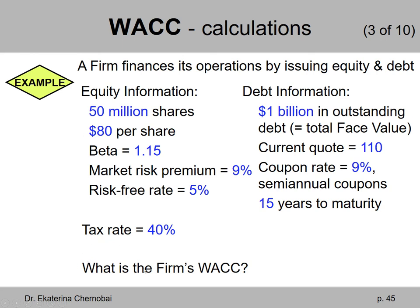The question is: what is the firm's weighted average cost of capital? This firm finances its operations by issuing equity and debt. There is no preferred stock in the picture, just common stock or equity and debt.